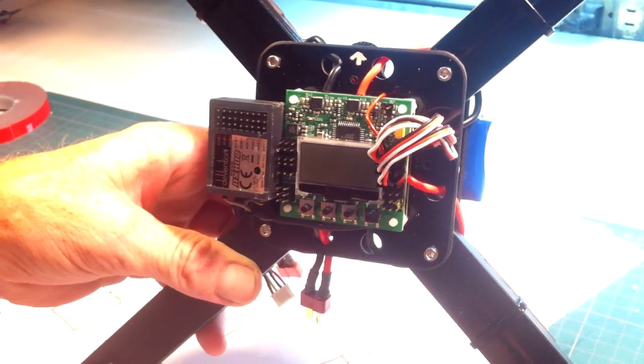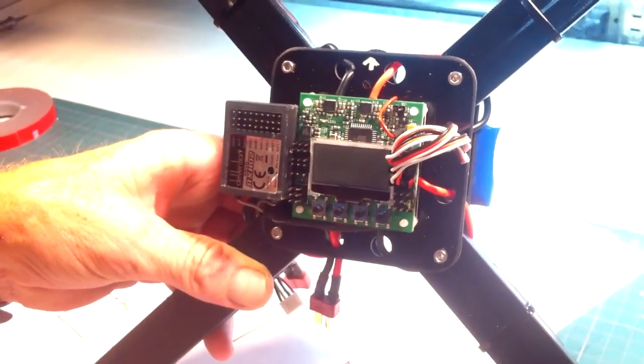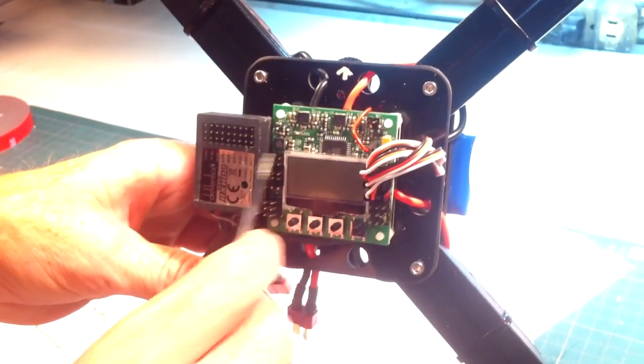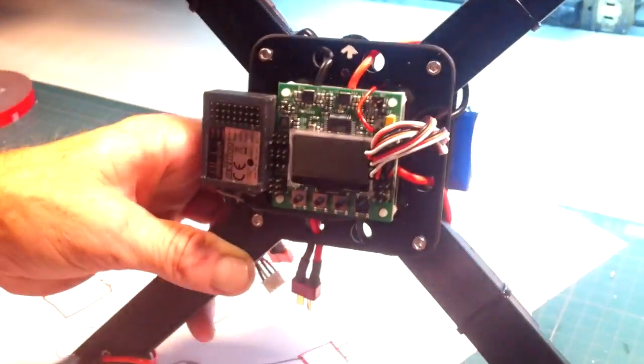Remember, the battery powers the ESCs, the ESC signal wires power the KK2 board, and through this connection here the KK2 board will then power up the receiver.